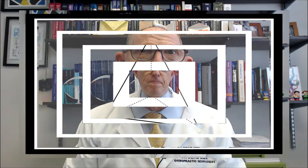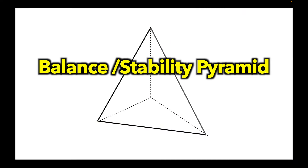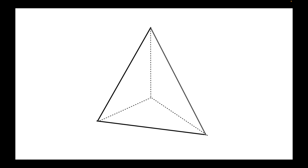And how that plays into vertigo, dizziness, and balance problems — I want to use a graphic I call the stability pyramid. This is the balance stability pyramid, a model I've been using for a long time to explain these concepts to my patients. Here we have a three-dimensional pyramid and at the base of the pyramid there are three corners.